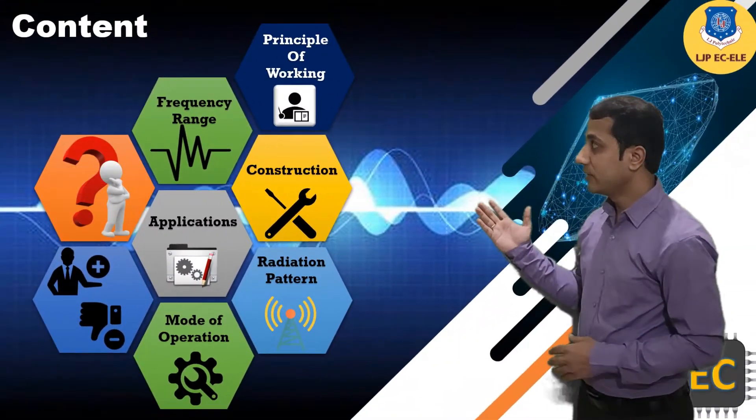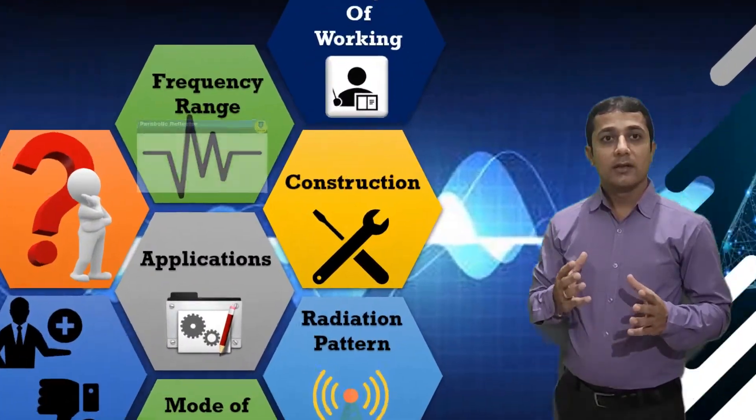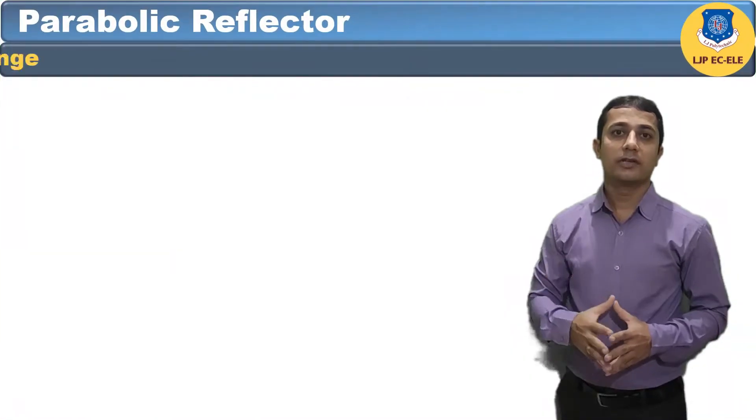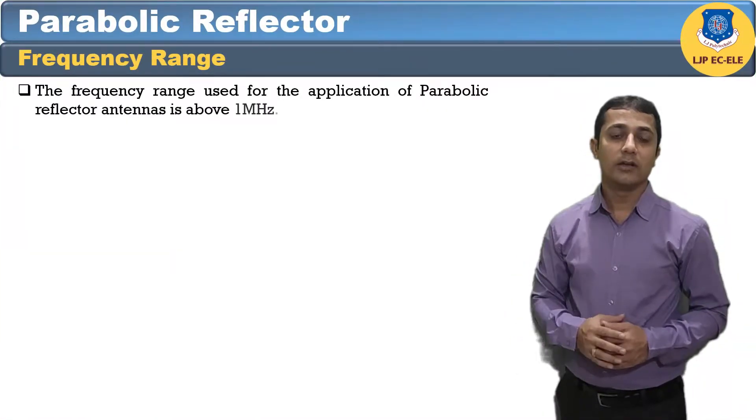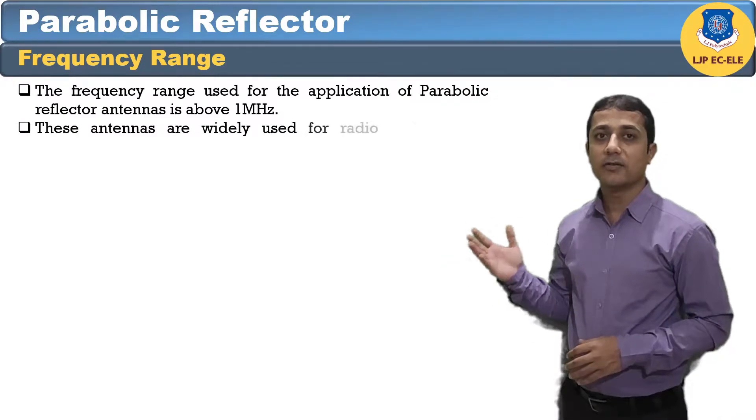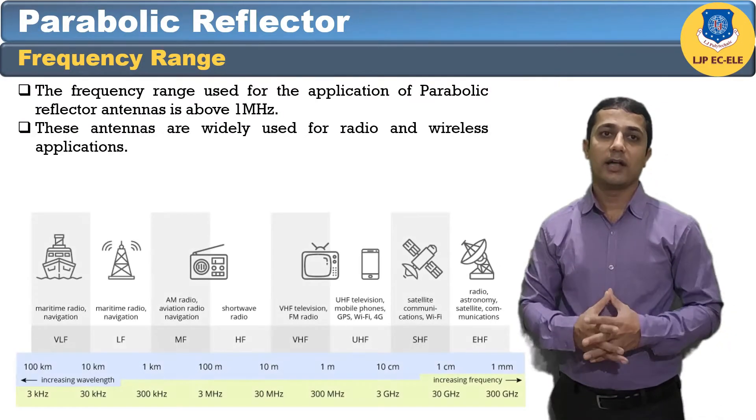Now let us see the frequency range. The frequency range used for the application of parabolic reflector antenna is above one megahertz. These antennas are widely used for radio and wireless applications.